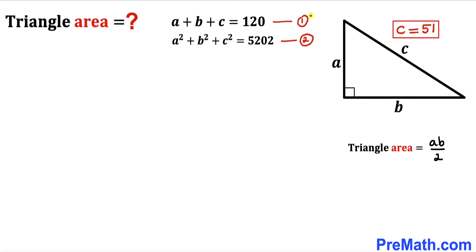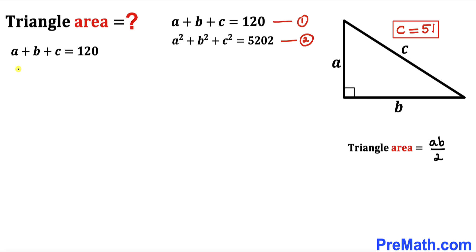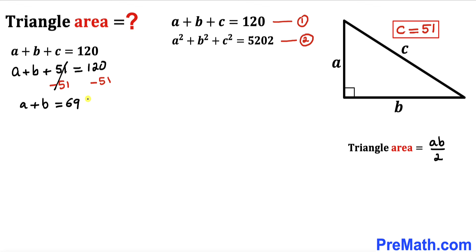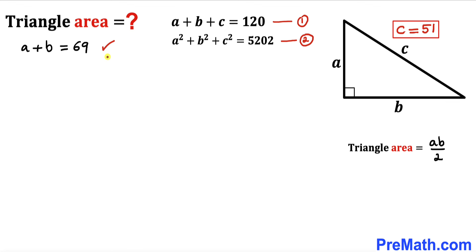Let's focus on equation 1: A plus B plus C equals 120. We already found that C equals 51, so substituting, we get A plus B plus 51 equals 120. Subtracting 51 from both sides, A plus B equals 69.